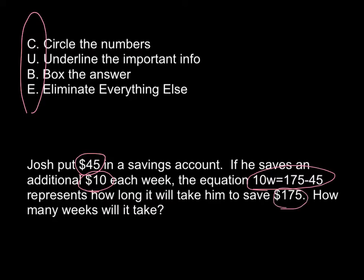The next part is we need to underline the important information. It says he put $45 in his savings account — I'm going to underline the word 'put' because that tells me I might need to do some sort of addition or subtraction. Then 'if he saves an additional $10 each week' is also important information. We have the equation, and we need to know how long it will take him to save $175.